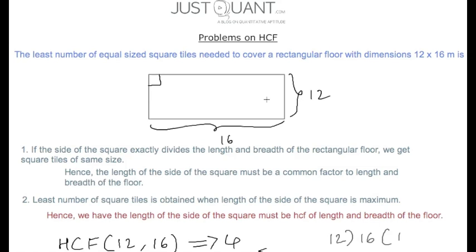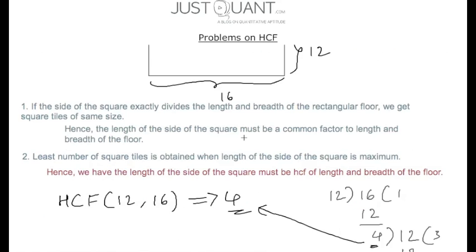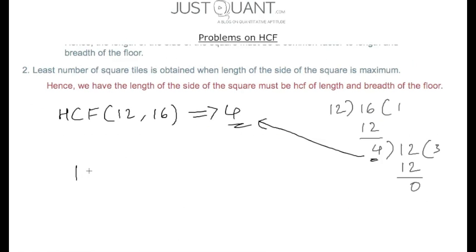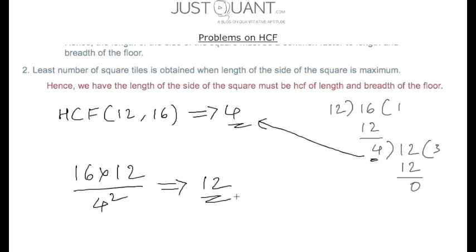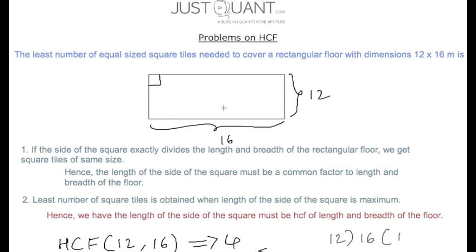The number of squares within this rectangular floor is obtained by dividing the area of the rectangle by the area of the square. The area of the rectangle is 16 × 12, and the area of the square is 4², which gives us 12. So the least number of equal size square tiles required to cover the 12 × 16 meter floor is 12.